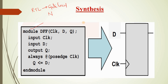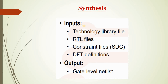The inputs for synthesis are technology library files, RTL files, constraint files, and DFT definitions. The final output of the synthesis process is the gate-level netlist.